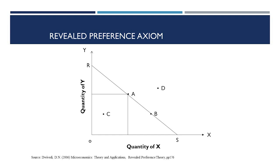As you can see, along the X-axis, good X is taken, and along the Y-axis, good Y is taken. Line RS represents the budget line of Mr. P. This budget line is the same as the Hicks-Allen budget line. All commodity baskets that lie on the line, like point A, and below, like point C, are affordable to Mr. P. Point A has a particular bundle of commodity X and commodity Y.